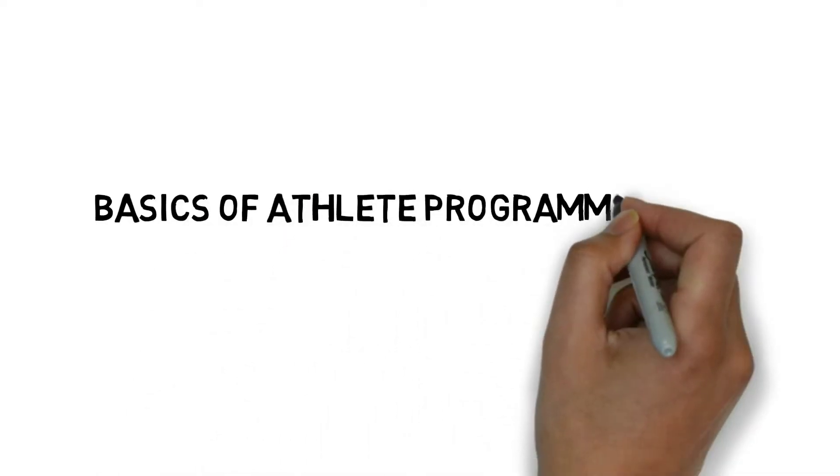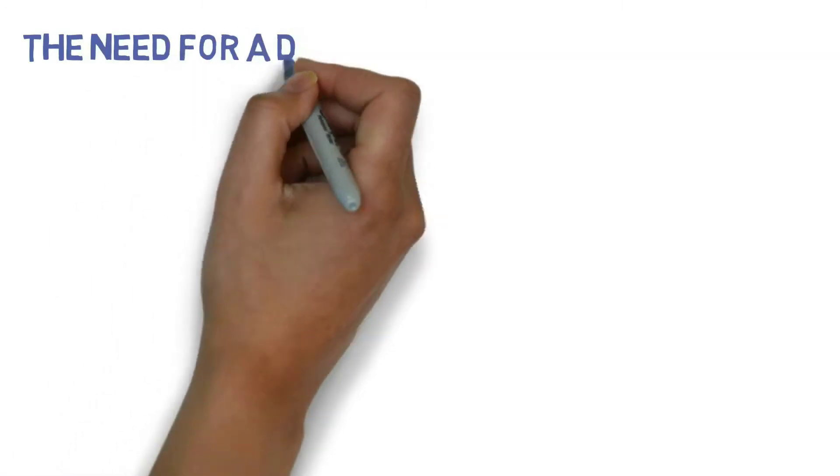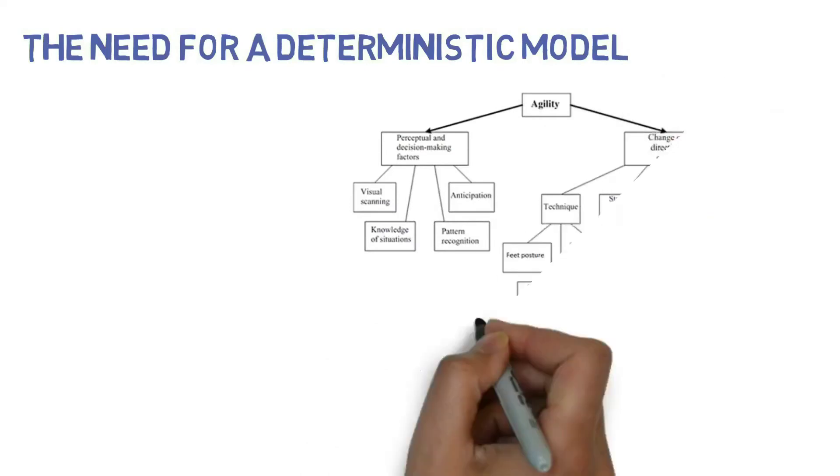Welcome to part one of our video series on the basics of athlete programming. In today's video we're going to talk briefly about the need for a conceptual overview or sometimes called a deterministic model.